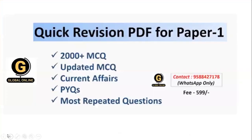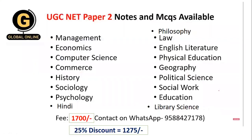Before we go ahead, a quick note on what Global Online has to offer. We have a quick revision PDF for Paper 1 consisting of 2000-plus MCQs, updated MCQs, current affairs, previous year question papers, and most repeated questions, available at the given WhatsApp number for 599 rupees. For Paper 2, we have notes and MCQs available — the list is on screen. The fee is 1700, but right now a 25% discount brings it to 1275. Get in touch on the given WhatsApp number to prepare well for Paper 1 and Paper 2.